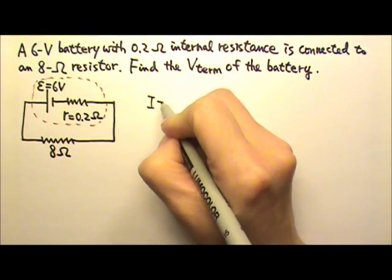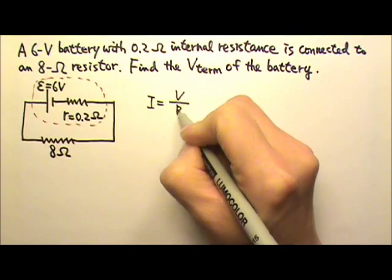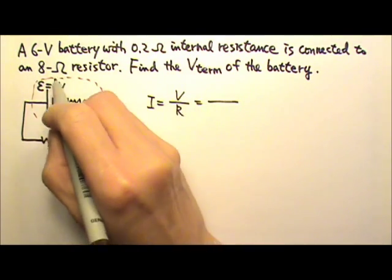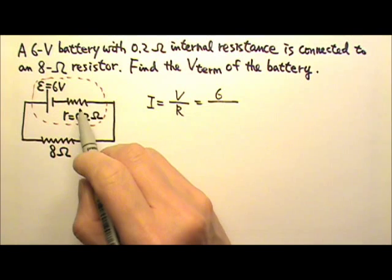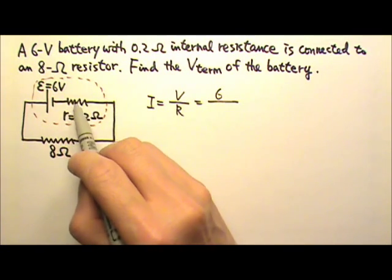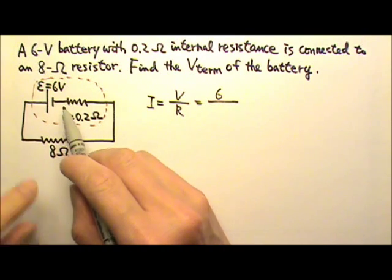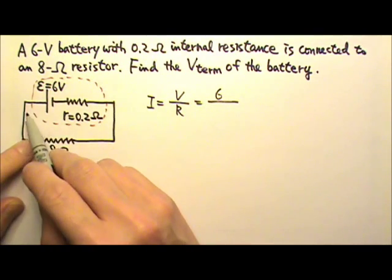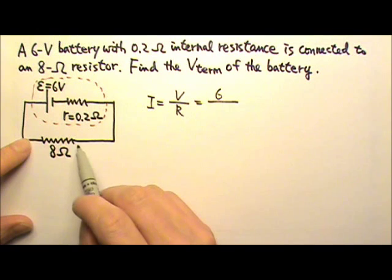So the current in this circuit is V over R. The voltage in the circuit is 6 volts, and these two resistors, they are in series. Because they have one end together, the other end is not together because there's a battery in the middle, and there is no branch coming out.